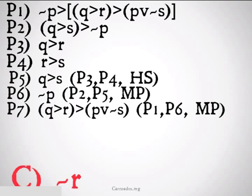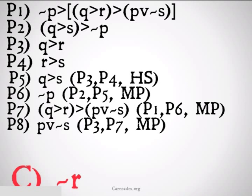That would be q implies r implies p or not s from premise 1, premise 6, modus ponens. Now what I'm going to do, what can I do with this implication? I already have the beginning of the implication, the antecedent. I have q implies r. So I'm going to use that to conclude p or not s from premise 3, premise 7, modus ponens.